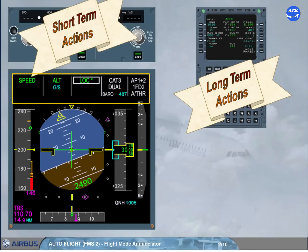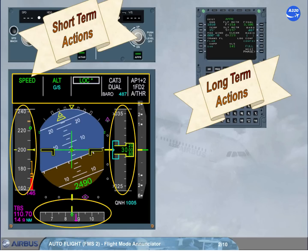The guidance mode, engagement, arm status, and their associated guidance targets are provided on the FMA and PFD scales — Speed, Heading, Altitude.